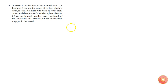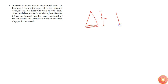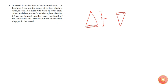A vessel is in the form of an inverted cone. An inverted cone is something like this shape. Its height is 8 centimeters and the radius of its top, which is open, is 5 centimeters. Lead shots, each of which is a sphere of radius 0.5 cm, are dropped into the vessel. When they are dropped, one-fourth of the water flows out. Find the number of lead shots dropped into the vessel.